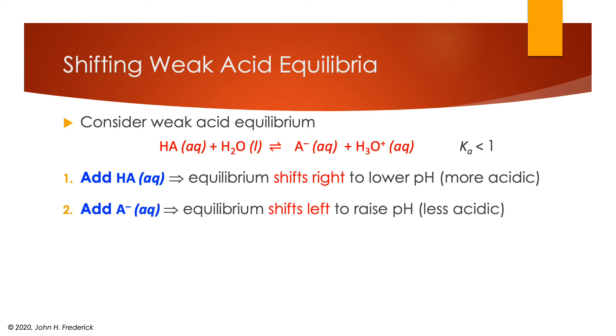If we added the conjugate base, that's on the product side, now we'll shift the equilibrium to the left, and that actually raises the pH. It becomes less acidic because we've removed now some hydronium ions from the solution. If we add hydronium ions, the equilibrium will shift left also because we're adding more on the product side, but we've added hydronium ions, so it's still going to lower the pH. And this is something that's not obvious to a casual observer, but you will always lower the pH when you add hydronium ion, even if it shifts this equilibrium from products to reactants.